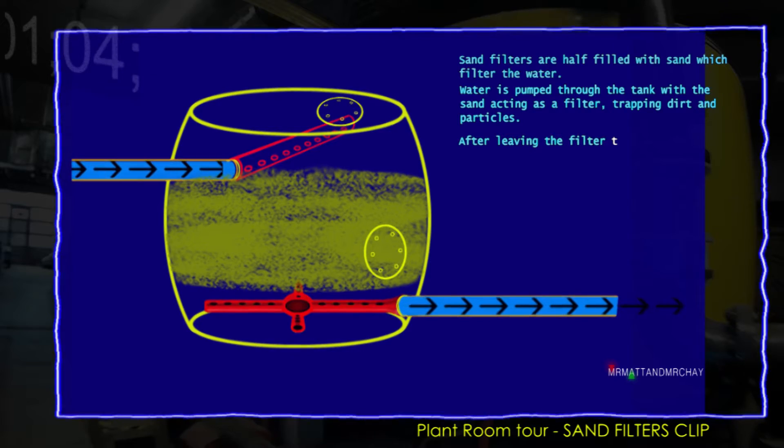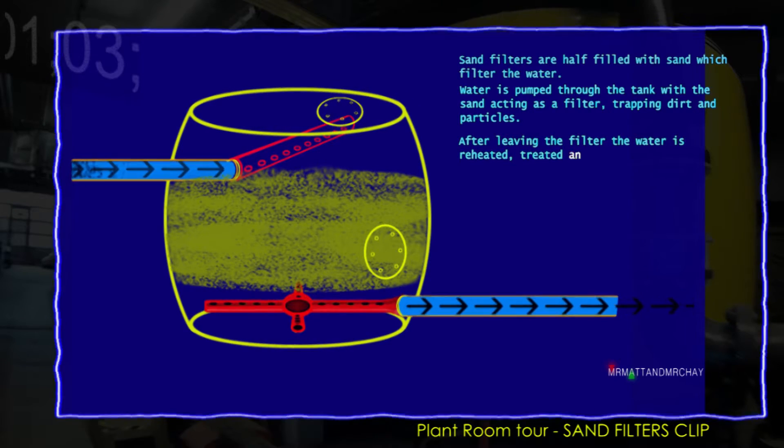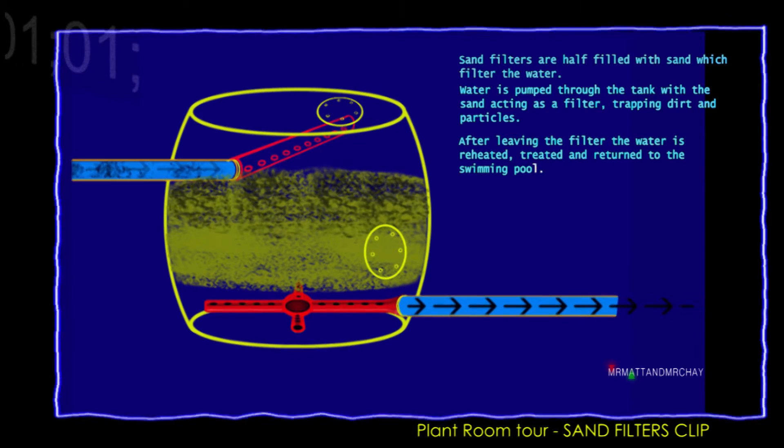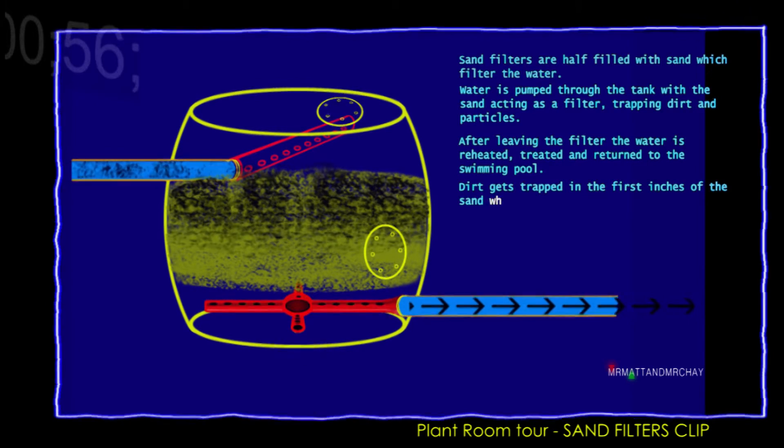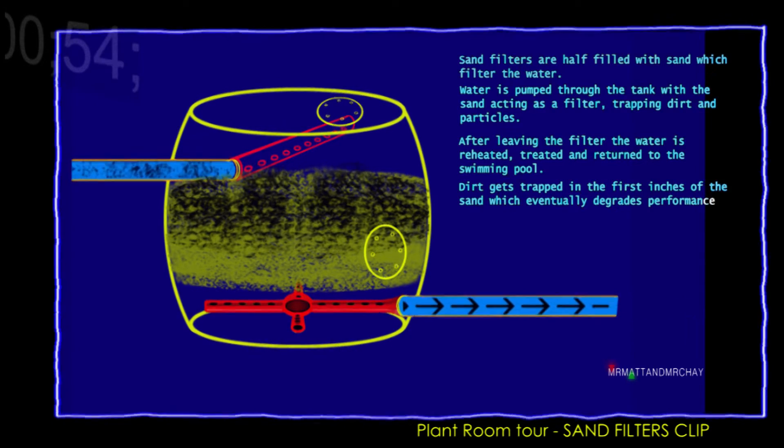After leaving the filter, the water is reheated, treated, and returned to the swimming pool. Dirt gets trapped in the first few inches of sand, which causes resistance and degrades the sand filter's performance.